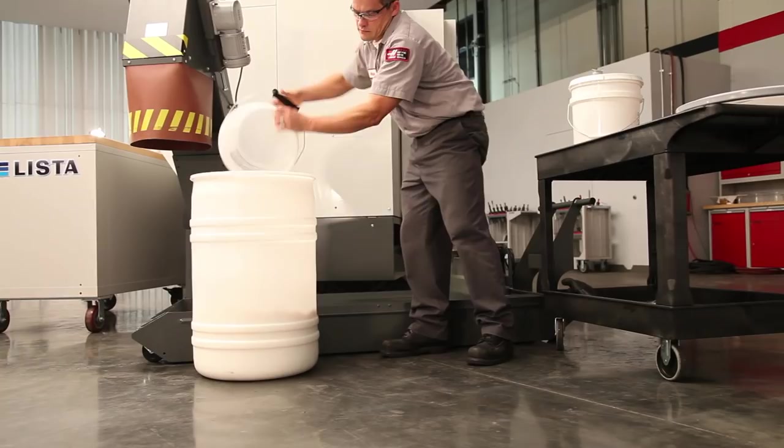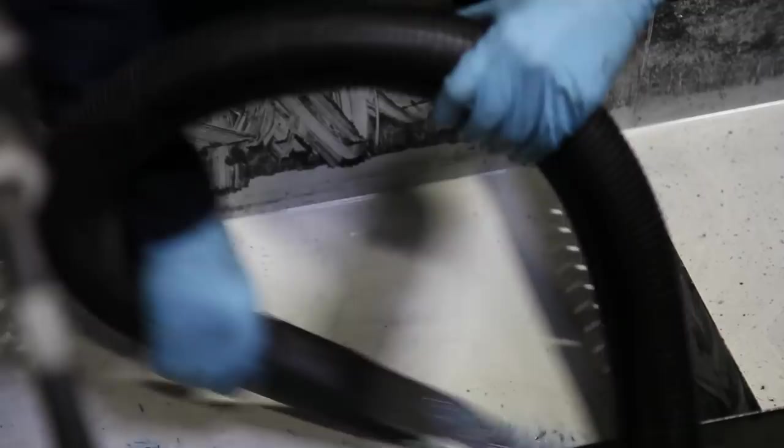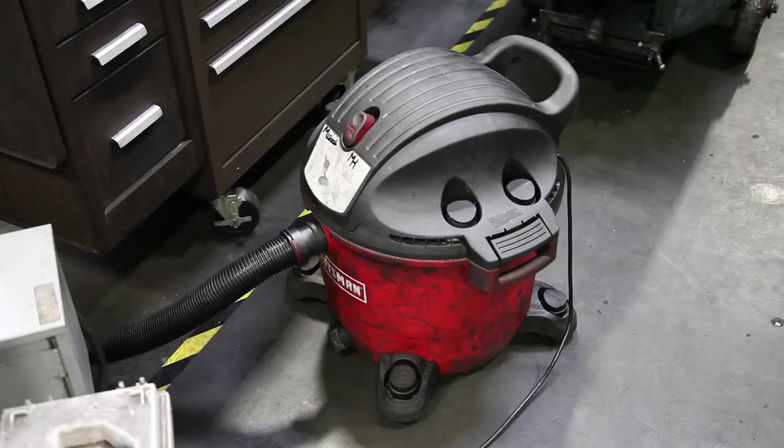Some wet and dry vacs can be used to pump water out of a coolant tank. Also, a wide variety of sump pumps exist. Even inexpensive smaller units can often be used to drain the tank of your Haas machine.